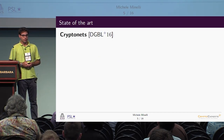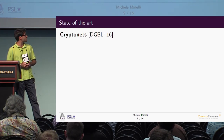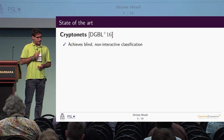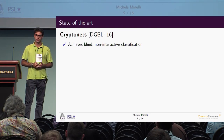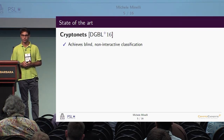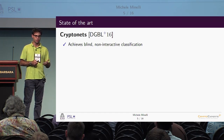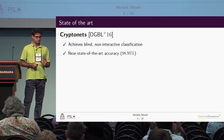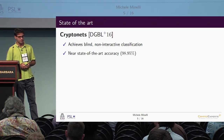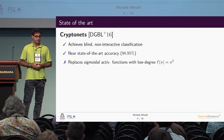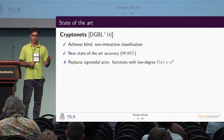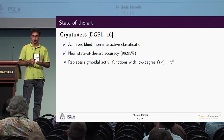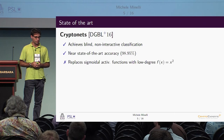Currently, the state of the art for this problem is CryptoNets, proposed in 2016 by people at Microsoft Research. It achieves blind — meaning homomorphic — non-interactive classification, where non-interactive means it does not rely on multiparty computation. It achieves almost state-of-the-art accuracy, nearly 99%. The problems are that the usual sigmoidal activation functions are replaced with low-degree polynomials because they are easier to evaluate homomorphically.